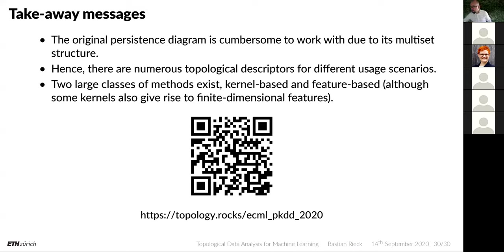Typical persistent homology implementations sidestep this dependency by using an index: if two simplices can't be told apart, they take the one with the lower index, adding things in lexicographical order — e.g., add simplex AB then simplex BC. You're absolutely right that this can create dependencies, and in fact in one of the papers discussed in the next lecture, my colleagues and I actually looked at this, because there's a fascinating relationship to the max pooling operator in machine learning.